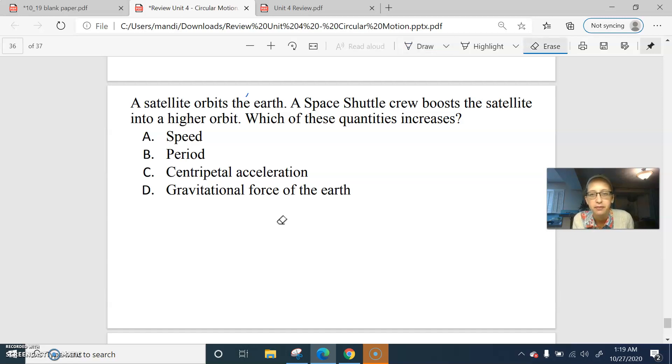Alright, so we have a space shuttle crew boosting a satellite into higher orbit. So we have Earth, E for Earth, and a satellite is going around, and then they boost it and make the radius bigger. But it's still in orbit. What changes?